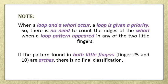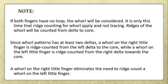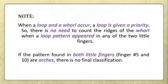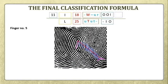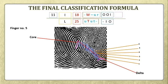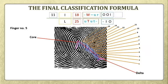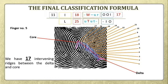Let's now classify our example. Since finger number 5 is already a loop pattern, it will be the pattern classified. Finger number 5 is ridge counted after identifying the core and the delta. After counting the intervening ridges, it was found out that finger number 5 has 17 intervening ridges between the delta and the core, which gives us 17 as our final classification.